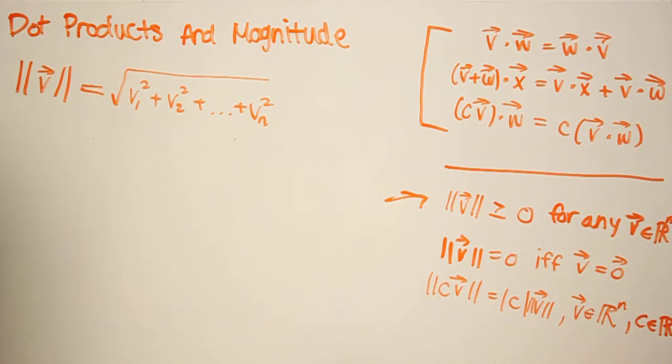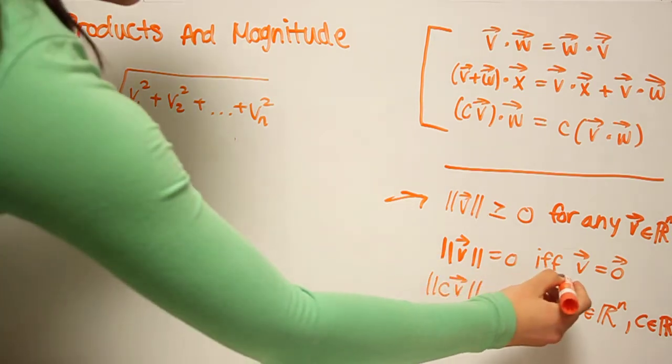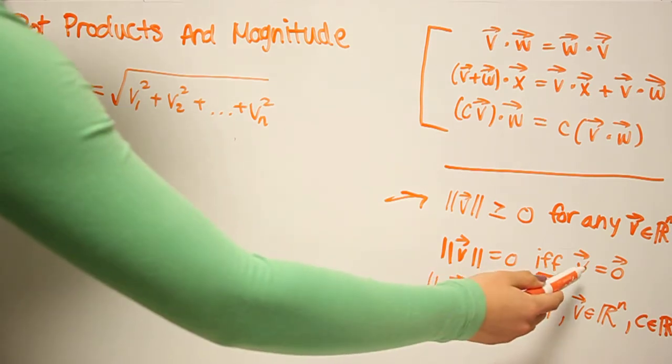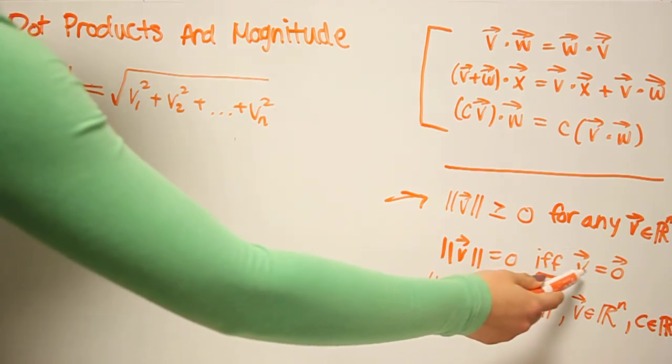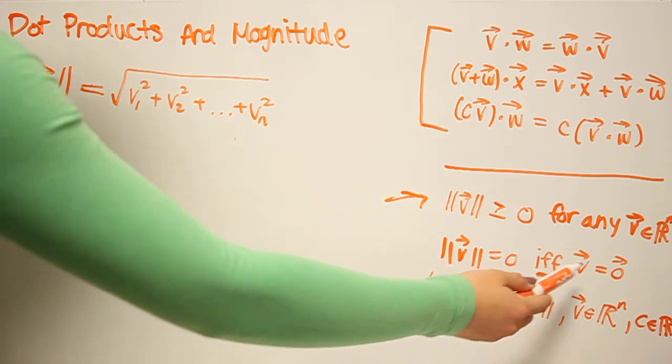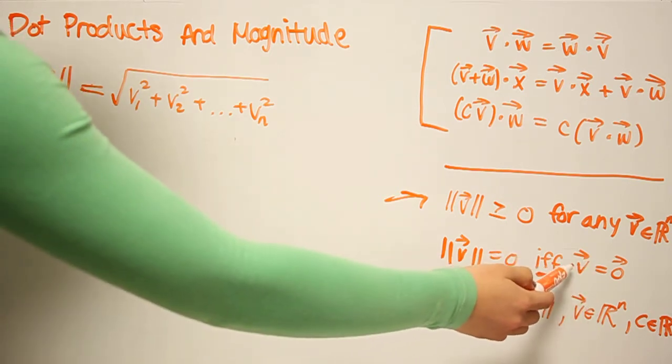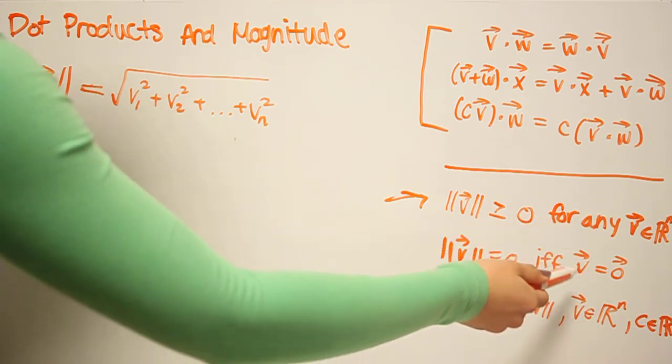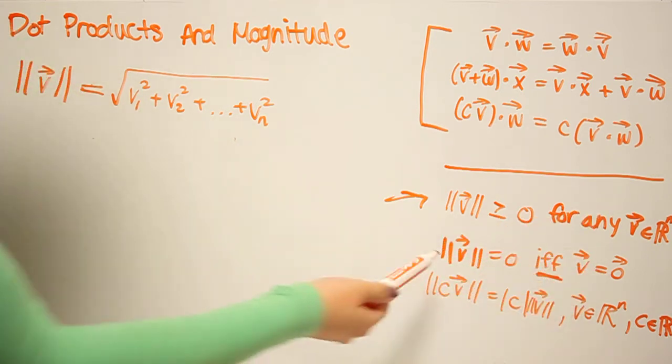The magnitude of a vector is zero if and only if the vector is the zero vector. And if and only if means that, similarly, if the magnitude of a zero vector is also zero.